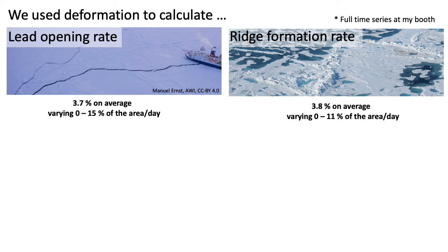Let's go back to how all our research might benefit from these results. First, we can use deformation to calculate lead opening rates. In the 20 km distance to Polarstern, this was 4% on average per day, with peaks up to 15% sometimes. Those numbers could be used to estimate heat and gas exchange, new ice production, and brine release. On the other side, we can also calculate ridge formation rates, which were 3.8% on average. This could be used to estimate the volume of ice that was reworked and salt-enriched.